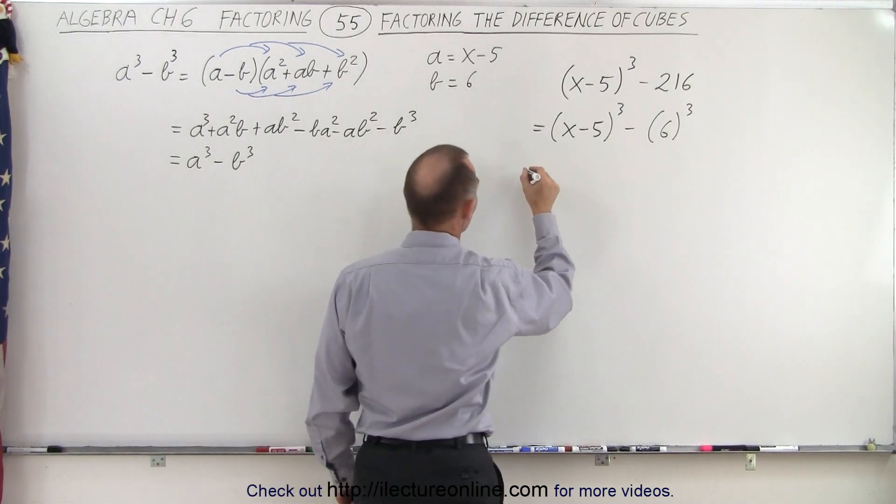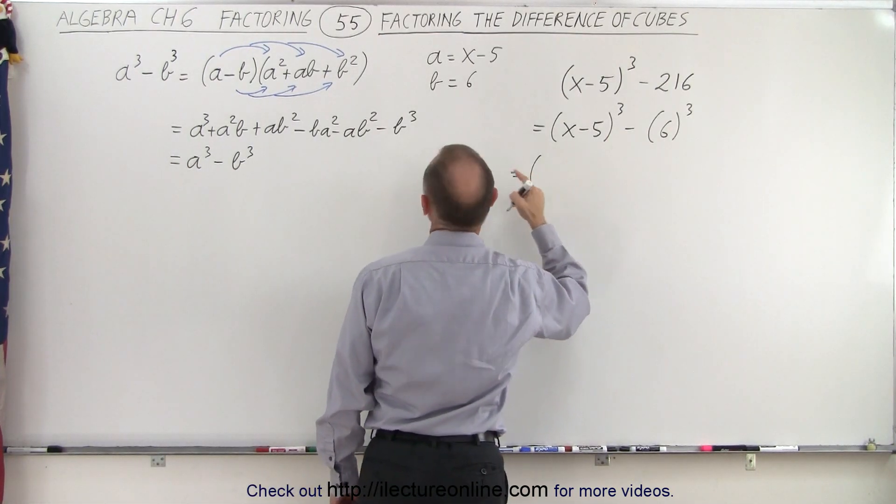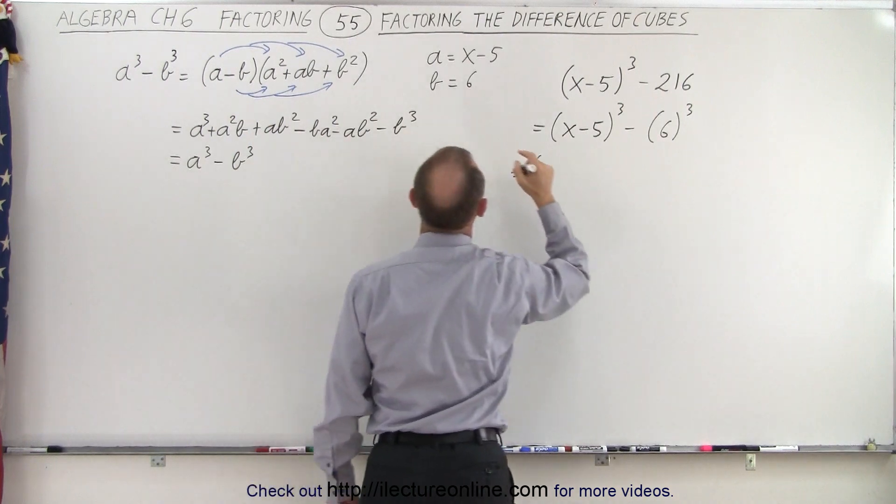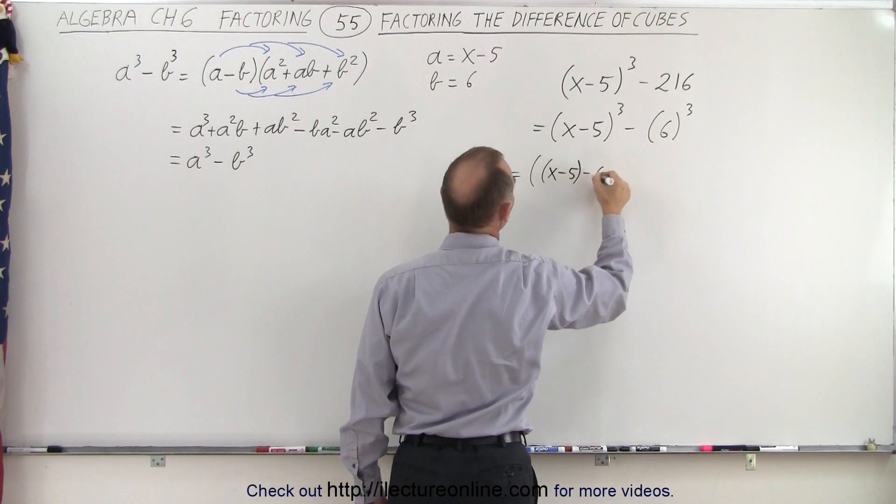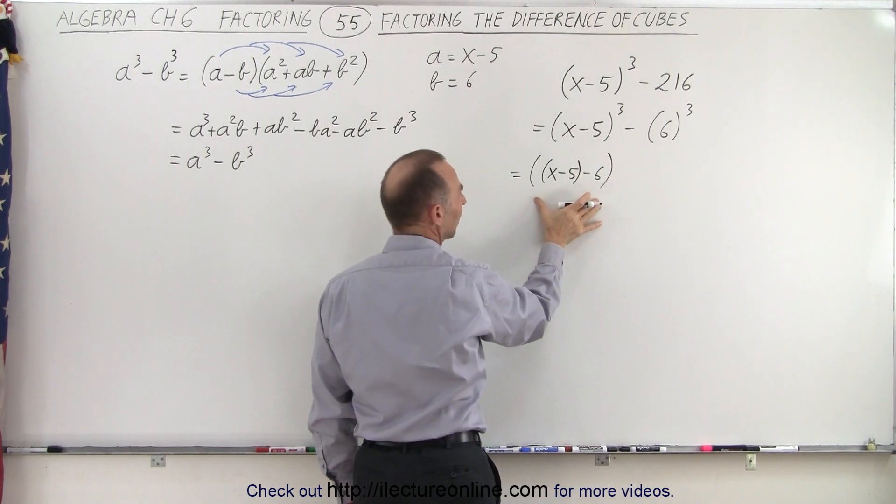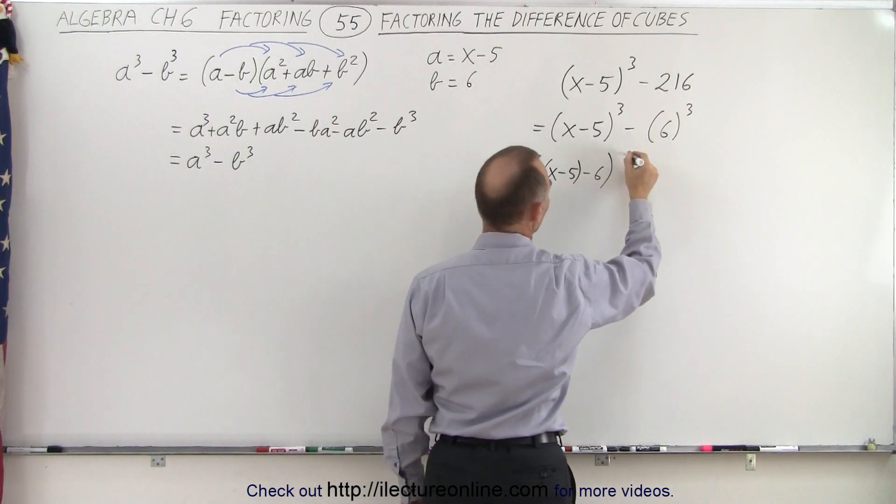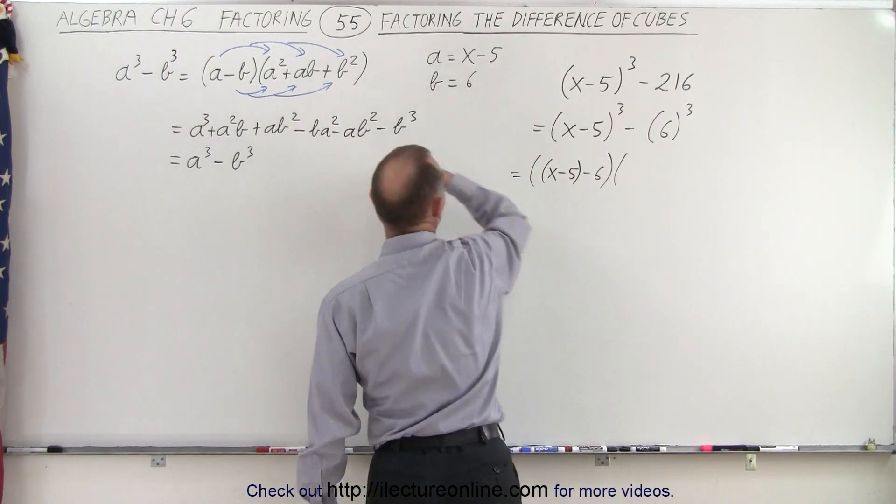All right, let's try that. So this is equal to, first of all, a minus b now becomes the quantity x minus 5 minus 6, and let's write it like this now.